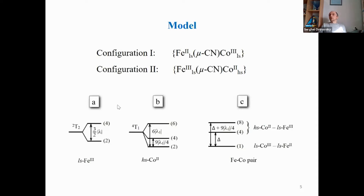For excited configuration 2 — high-spin cobalt-2, low-spin iron-3 — we regard only two levels. The first is a direct product of ground Kramers doublets of iron and cobalt, with a corresponding degeneracy of four. The second is a direct product of the ground Kramers doublet of low-spin iron-3 and the excited quartet of high-spin cobalt-2, with a corresponding degeneracy of eight.